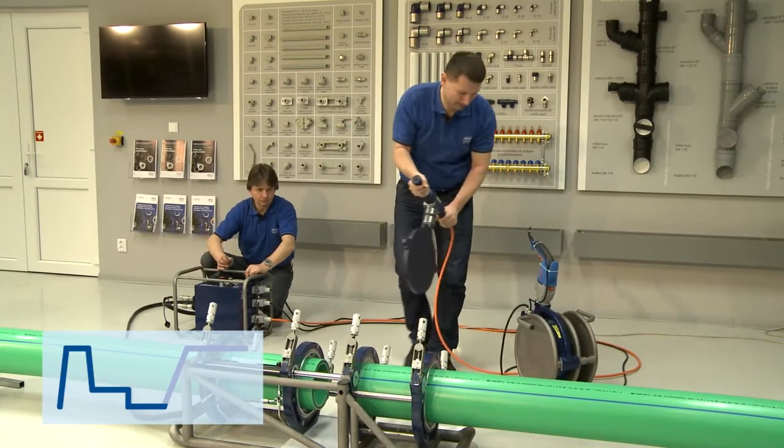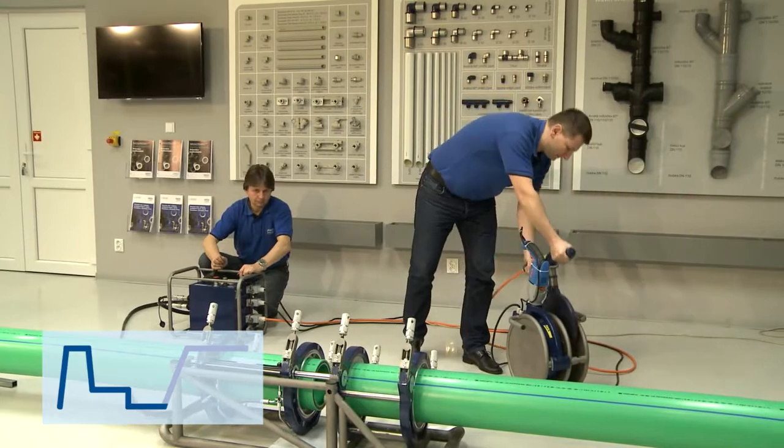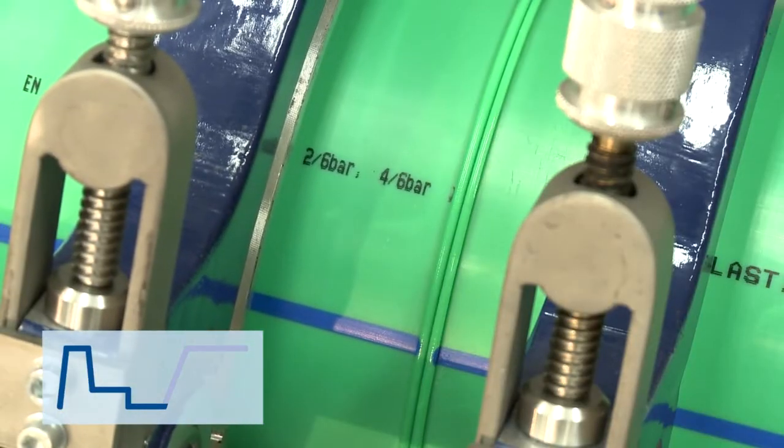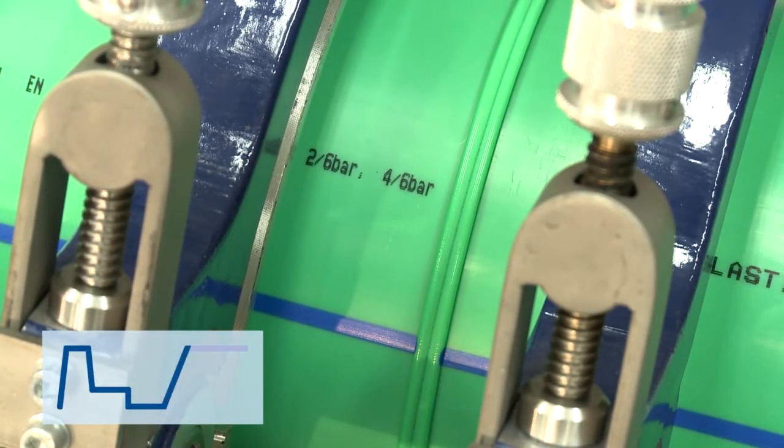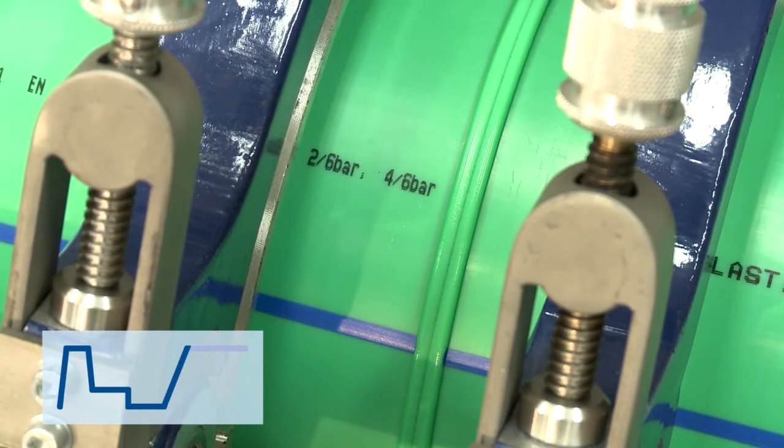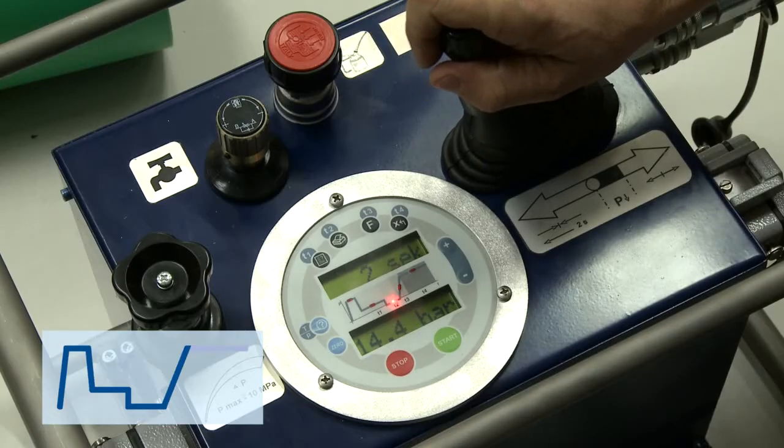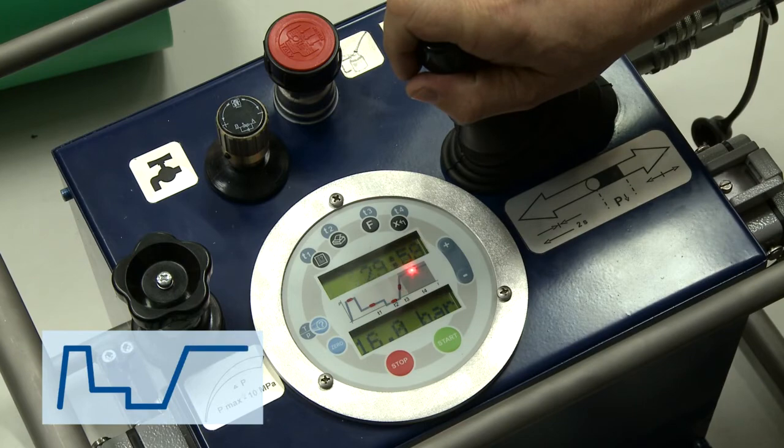After the heat up is done, pull the pipes apart with the help of the slide and remove the heater. Connect both pipes together as fast as possible and slowly raise the pressure to the required value. This will cause the melted layers to fuse together, forming a weld.